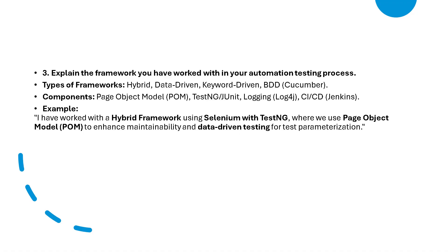The third question is to explain the framework you have worked with in your automation testing process. You have to explain whatever automation framework you are using in your current organization or team. There are various kinds of frameworks — hybrid, data-driven, keyword-driven, BDD, POM, TestNG, JUnit, CI/CD with Jenkins, and so on. For example, if you are following Page Object Model (POM), you can say: 'We use POM to improve code reusability and maintainability.'